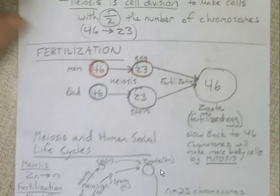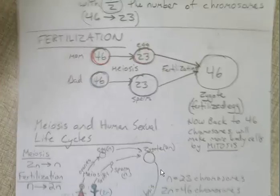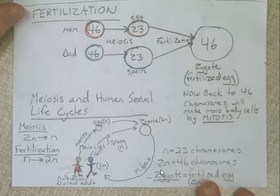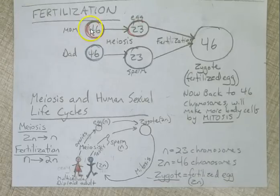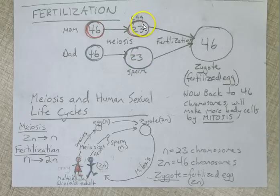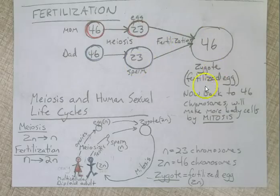Let's make sure we have down fertilization. The red represents mom, the blue represents dad — and this applies not just to us humans, but to most organisms on this planet, including plants. Mom has 46 chromosomes; she does meiosis in her ovaries and produces eggs with 23 chromosomes. Dad starts with 46 chromosomes, does meiosis in his testes, and produces sperm with 23 chromosomes. When the 23-chromosome egg and 23-chromosome sperm fuse together — that's fertilization — now we're back at 46, and we have a zygote, which simply means a fertilized egg.